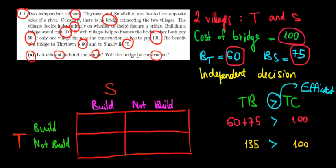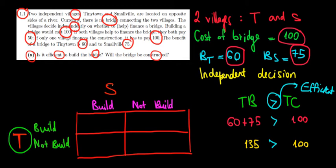Now what about the decision itself — will it actually be constructed? Remember, this is an independent decision, so we have a case of game theory. The two cities decide at the same time. Let T be player one and S be player two. To solve this game we need to fill in the payoffs, which are the net benefits — the expected gain — taking into account both the benefits and costs to each specific city.